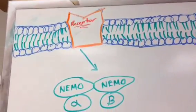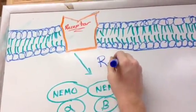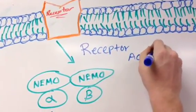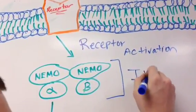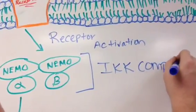This is the canonical pathway. The binding of ligand to a receptor leads to the recruitment and activation of an IKK complex, comprising IKK-alpha and/or IKK-beta catalytic subunits and two molecules of NEMO.